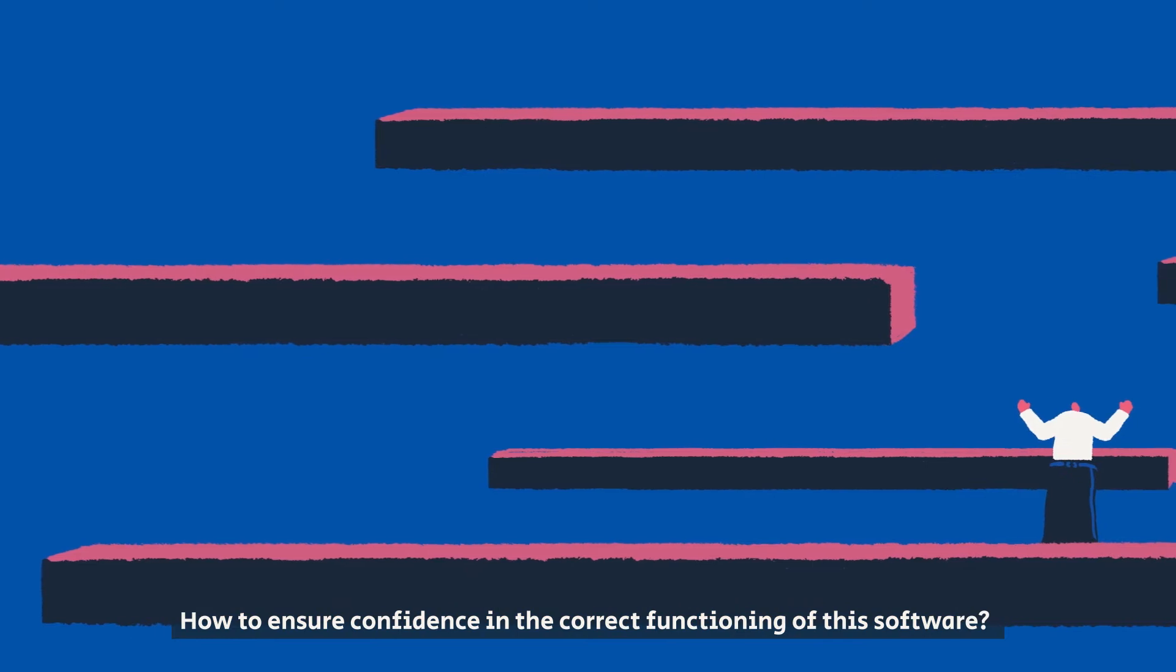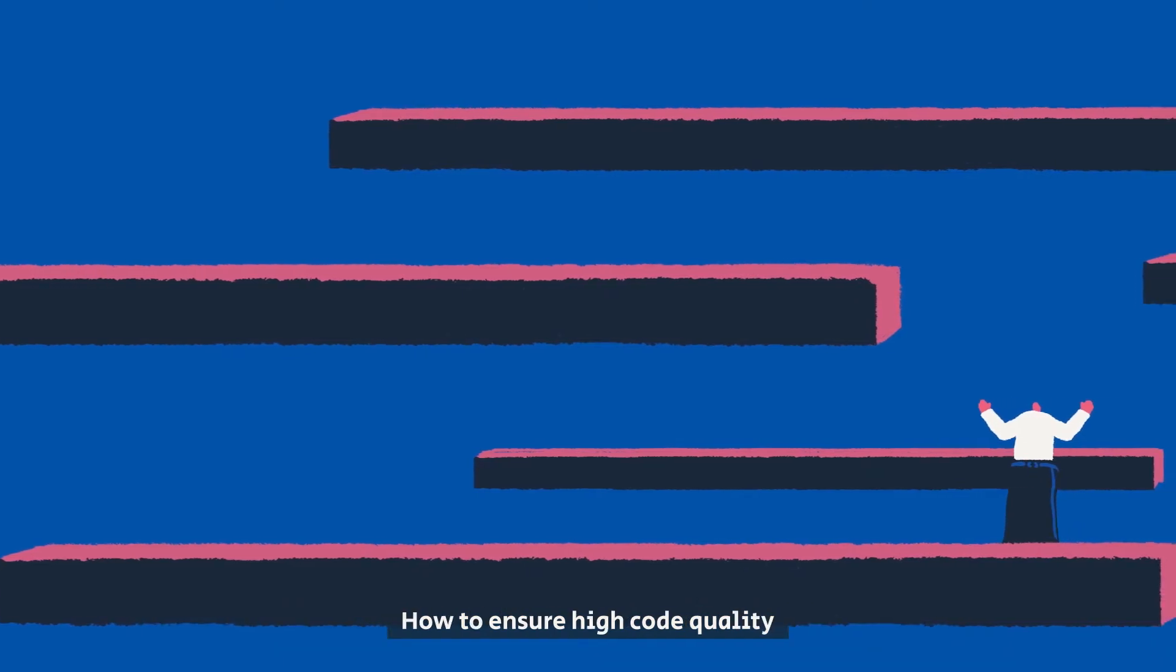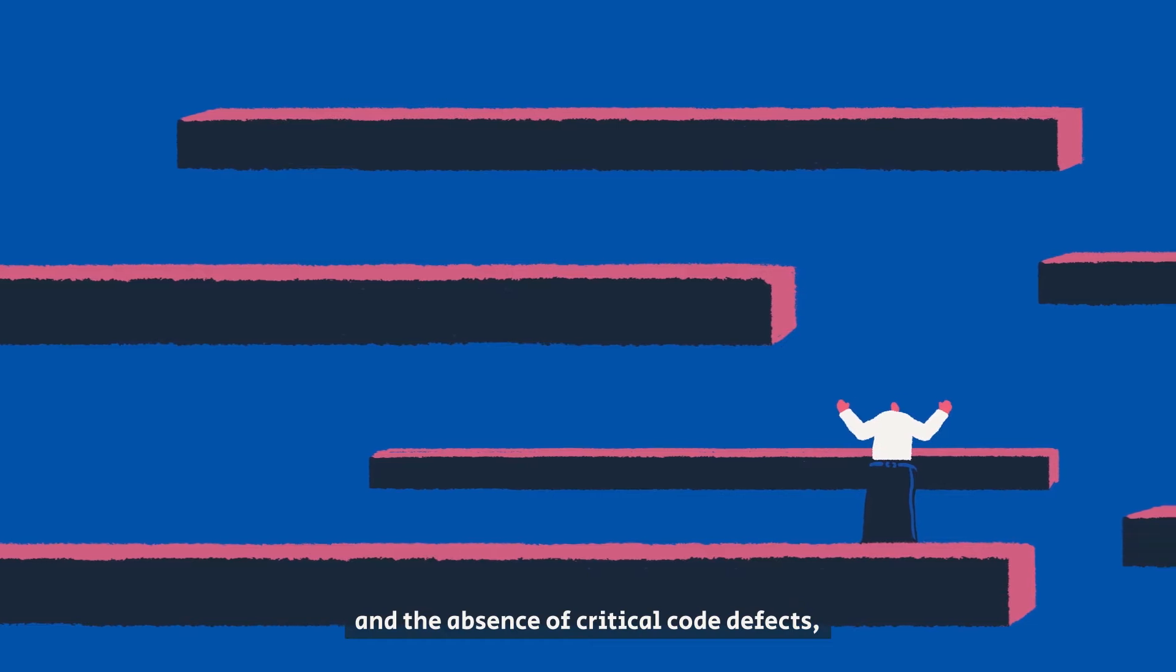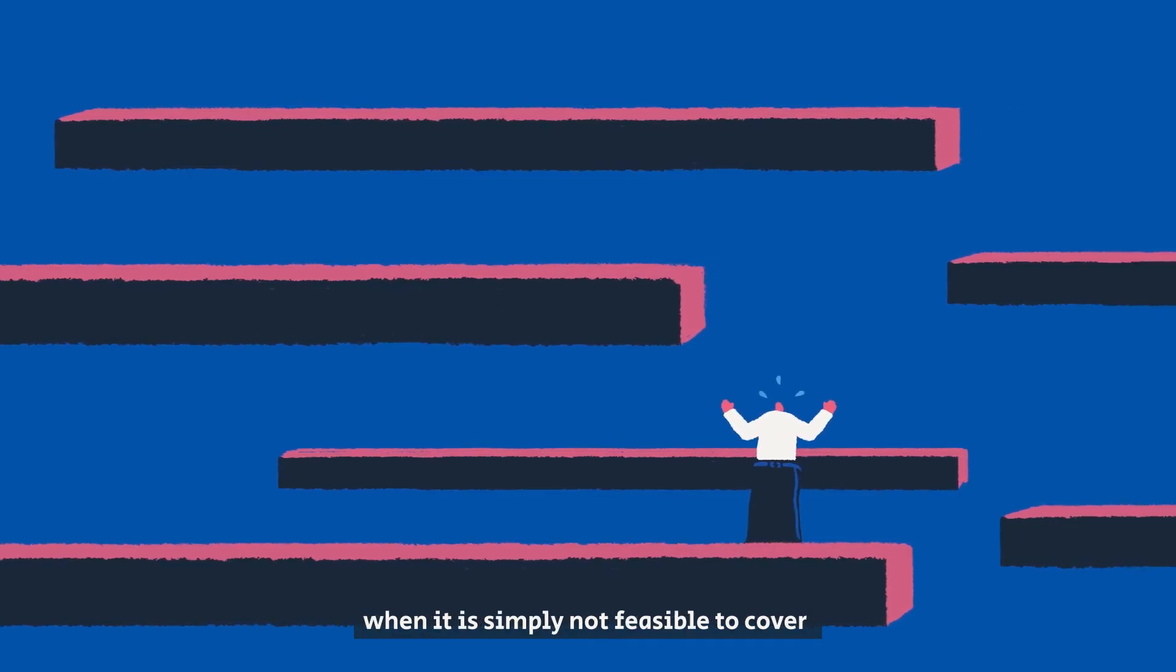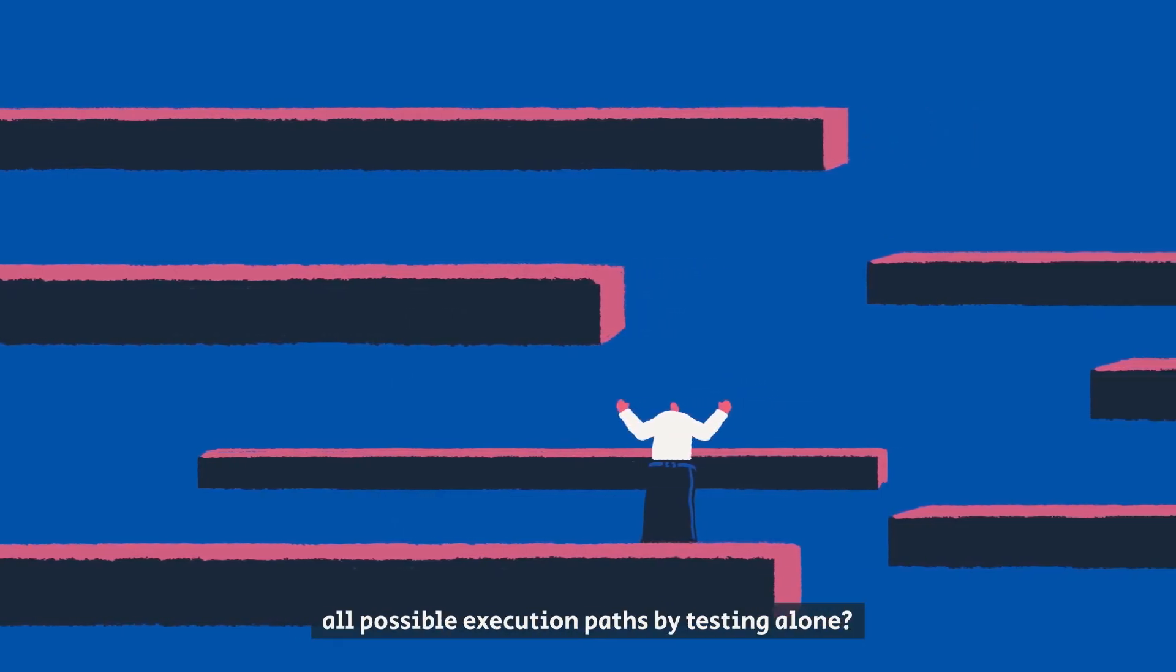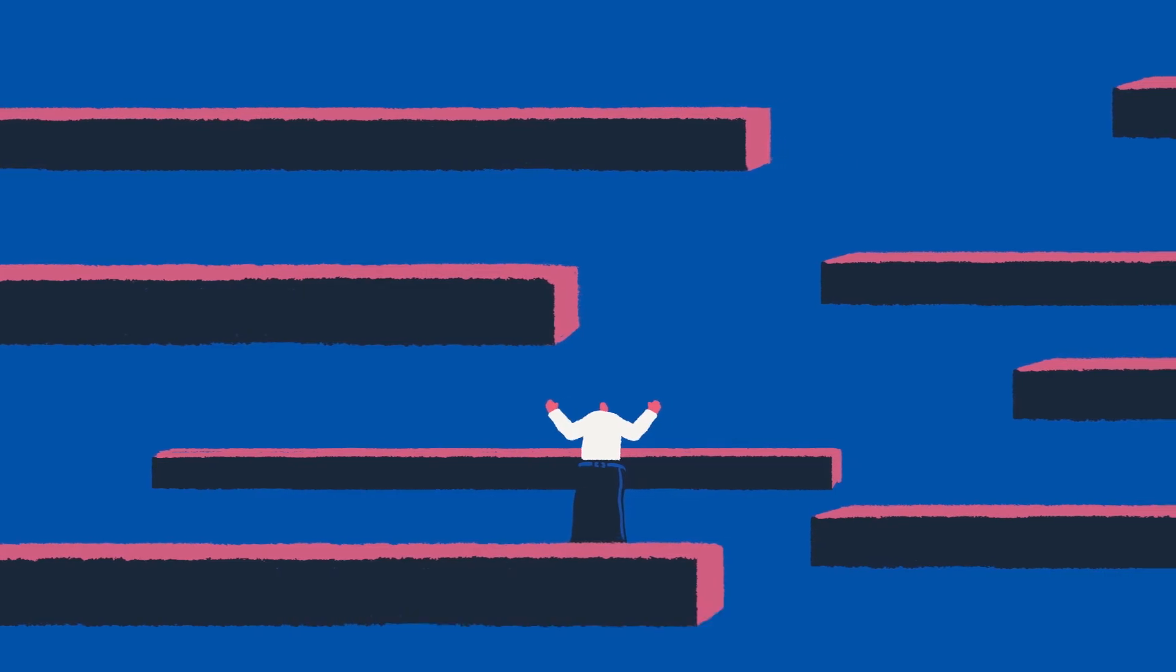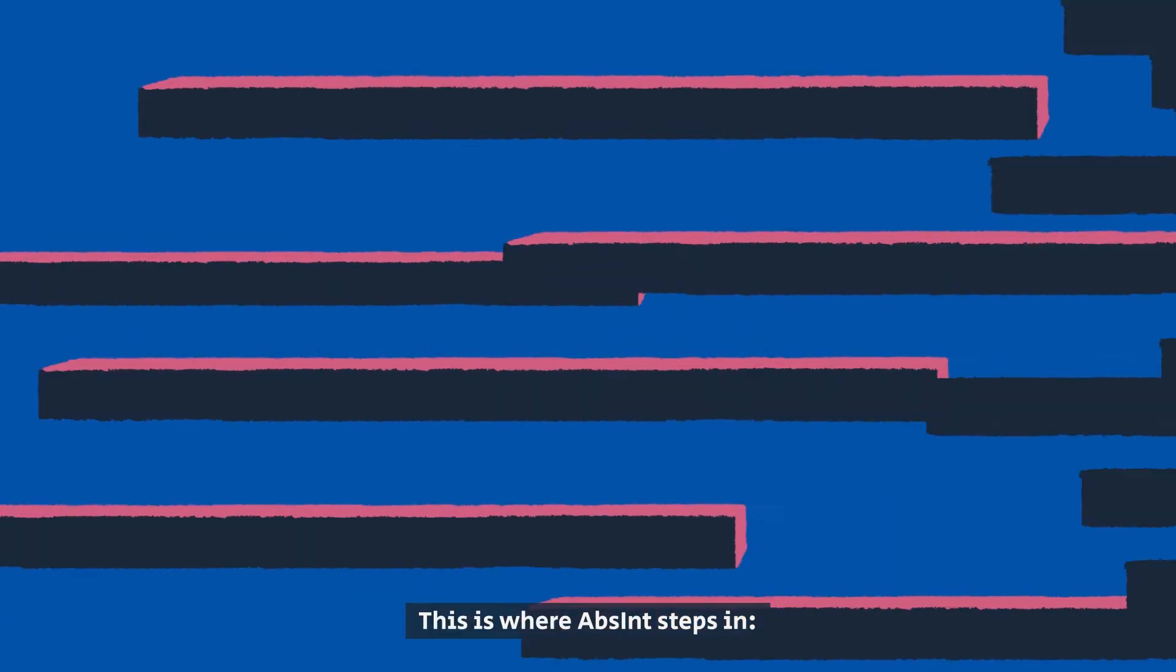How to ensure confidence in the correct functioning of this software? How to ensure high code quality and the absence of critical code defects when it is simply not feasible to cover all possible execution paths by testing alone? This is where Absinthe steps in.